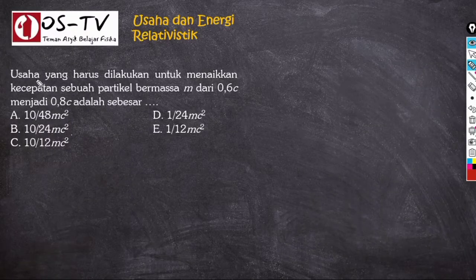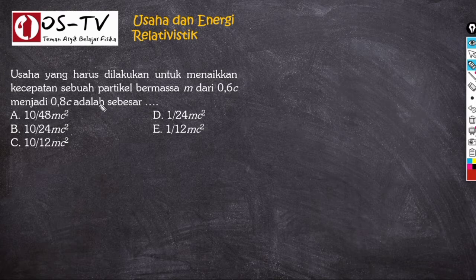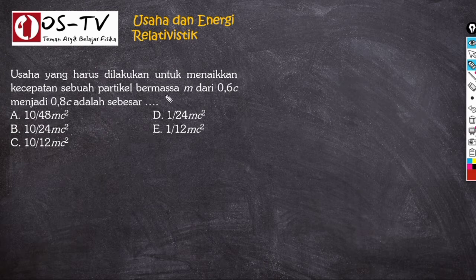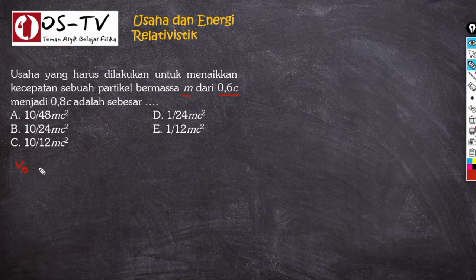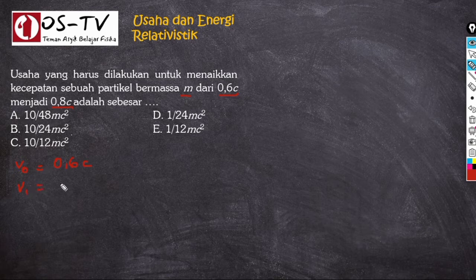Soal nomor 2: usaha yang harus dilakukan untuk menaikkan kecepatan sebuah partikel bermassa M dari 0,6C menjadi 0,8C adalah berapa? Dari soal: massa benda = M, kecepatan awal V₀ = 0,6C, kecepatan akhir V₁ = 0,8C. Yang ditanyakan adalah usaha atau W.